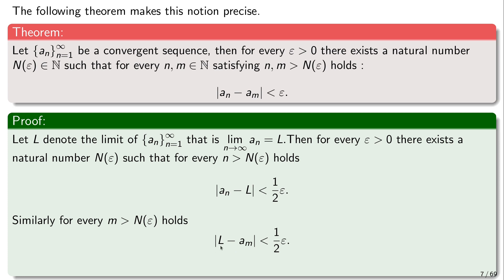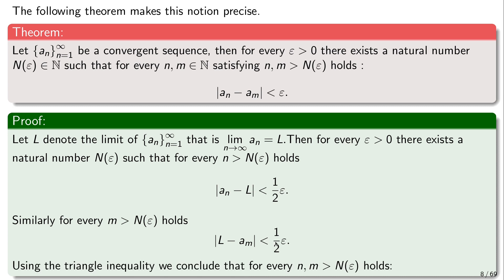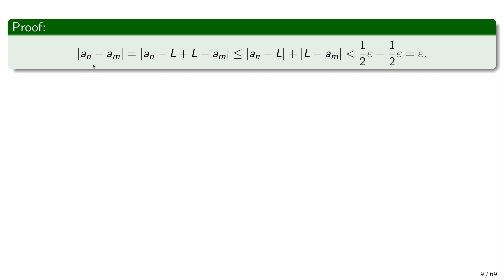I wrote the second inequality as |L − a_m| for convenience. Using the triangle inequality, since n and m are both greater than N(ε), those two inequalities hold simultaneously. We write |a_n − a_m| = |(a_n − L) + (L − a_m)|, and by the triangle inequality this is no bigger than |a_n − L| + |L − a_m|. Since both n and m are greater than N(ε), each term is smaller than epsilon over 2, so the total is smaller than epsilon. This holds for any n and m greater than N(ε).